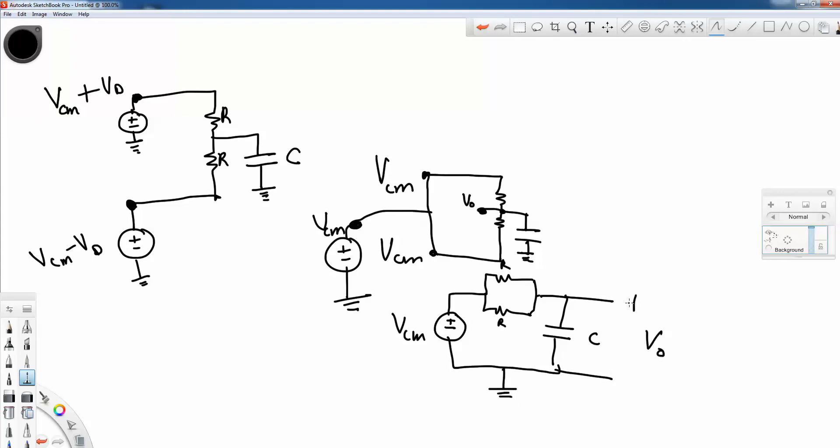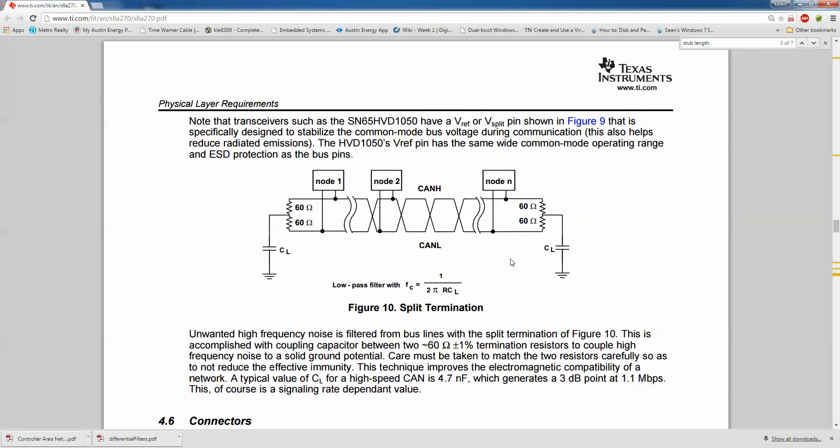Here's V out. So the corner of this is just now 1 over 2 pi R over 2 C. So R in the example they give us is 60 ohms. And C is 4.7.